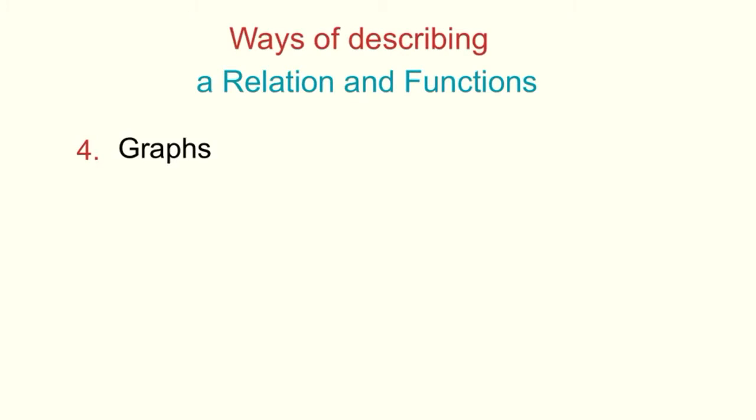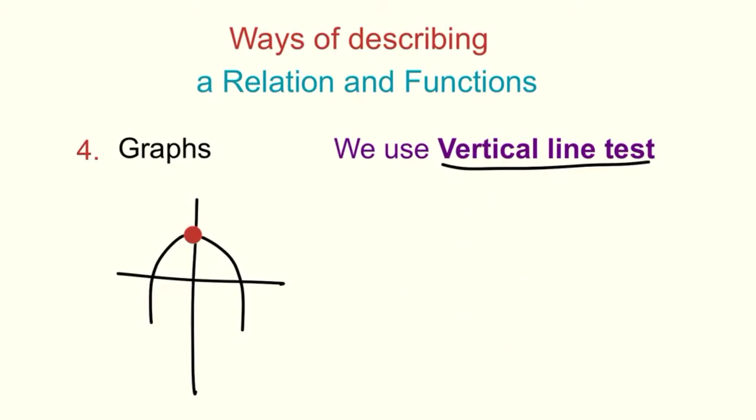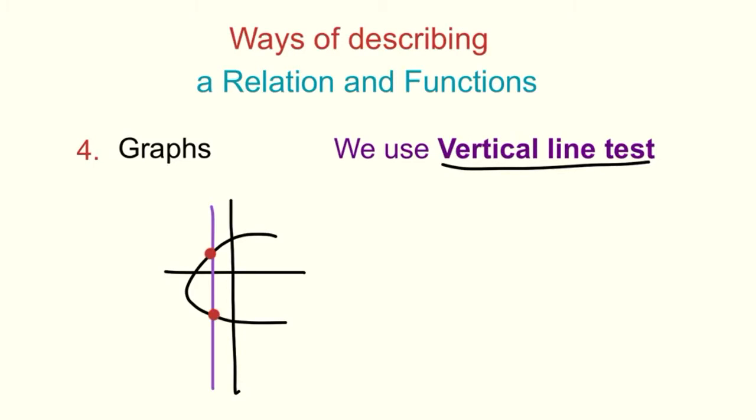Now for graphs, we use the vertical line test to test whether the graph is a function or not. It is a function if the vertical line hits the graph only once. But it is a relation if the point exceeds more than once.